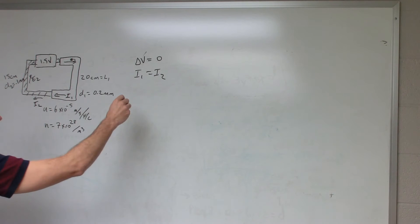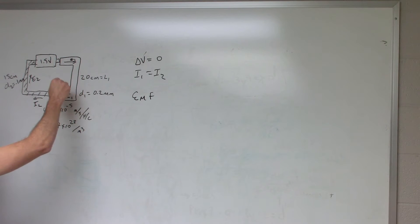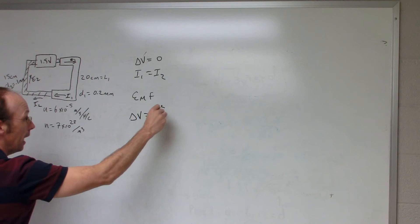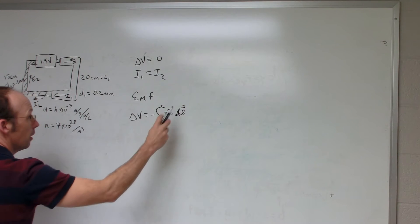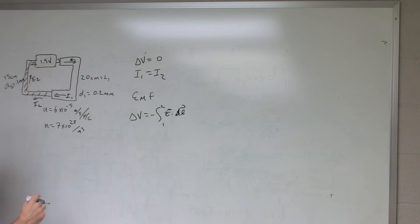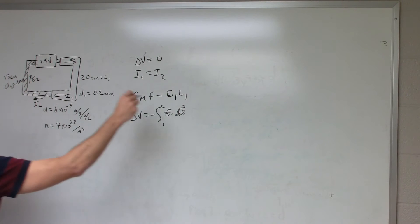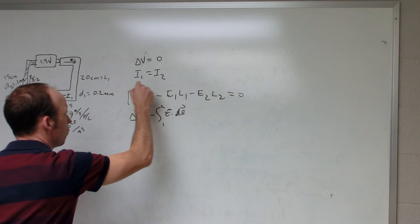So I get EMF, and then I get this length. It's a constant electric field in the same direction as the wire. If I'm integrating in the same direction, E dot dL, remember delta V is negative E dot dL. So these are in the same direction, but there's a negative sign there. So I get negative E1 L1, and then I have to integrate around here. I get negative E2 L2 equals zero. So that's one equation.